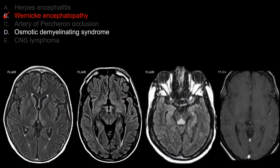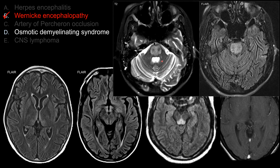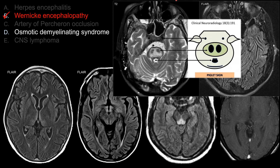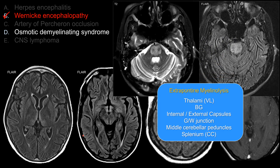Choice D, osmotic demyelinating syndrome. This is a picture of central pontine myelinolysis. The classic picture is diffuse involvement of the pons with preservation of the descending corticospinal tracts, giving a very distinct two-dot appearance — sometimes described as a piglet sign or a trident sign. Osmotic demyelinating syndrome can involve more than just the pons; they can have extrapontine involvement, hence extrapontine myelinolysis, usually affecting the thalami, basal ganglia, or internal capsule, as well as the middle cerebellar peduncle and splenium of the corpus callosum. It is uncommon to have extrapontine involvement without central pontine myelinolysis, so usually when you see extrapontine involvement, you will also have this classic picture of pontine involvement.